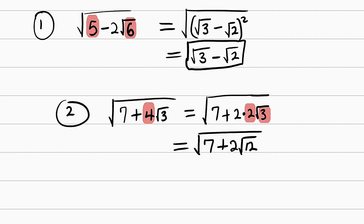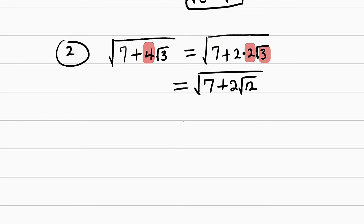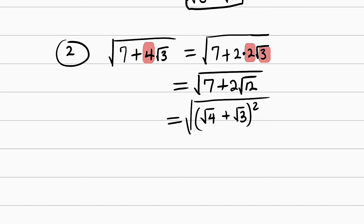Now we are going to think of two numbers which, when multiplied together, we get 12, and when added together, we get 7. And the numbers are 4 and 3. Therefore, this becomes (root 4 plus root 3) all squared under the square root. Square root will cancel the square, and we are only left with square root of 4 plus square root of 3. And square root of 4 is 2, so finally our answer is 2 plus root 3.